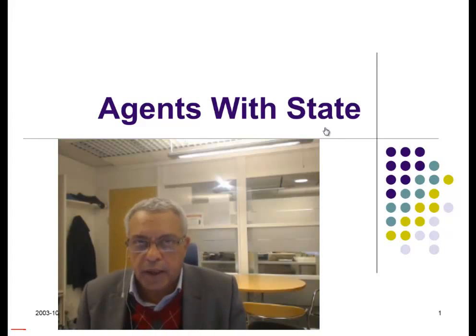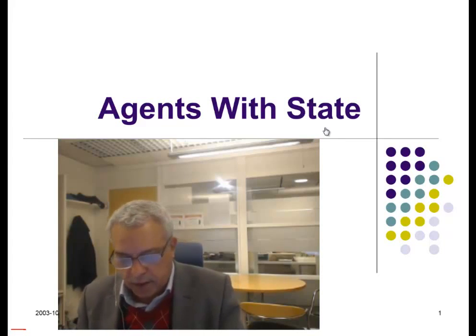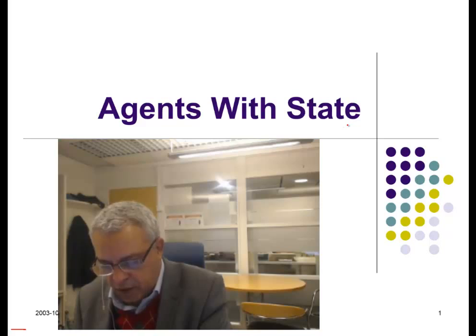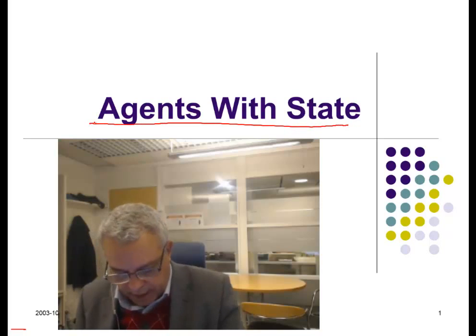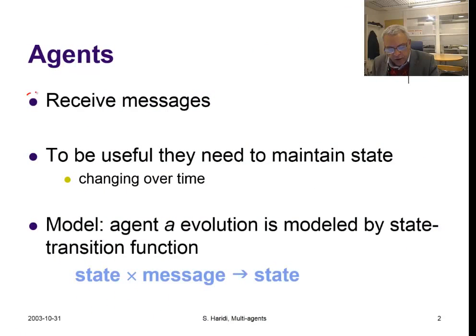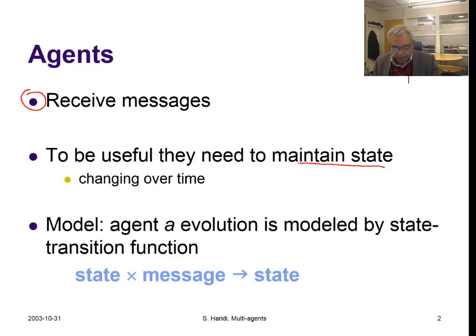In this unit we are going to add state to agents — agents with state. We know that an agent receives messages. To be useful, we need agents that maintain state, and that state will change over time. What we want to do is to be able to add state in a declarative model just by having ports as a primitive.